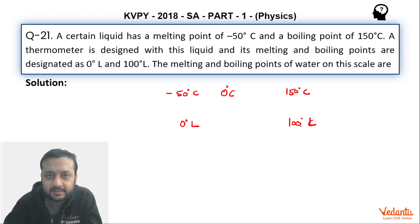So 50 degree rise ke liye 25 degree rise hoga. That means 25 degrees L pe water will melt, or we can say ice will melt.